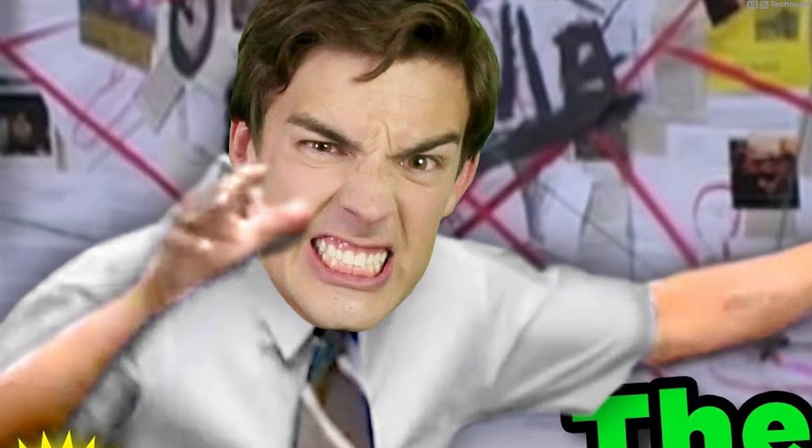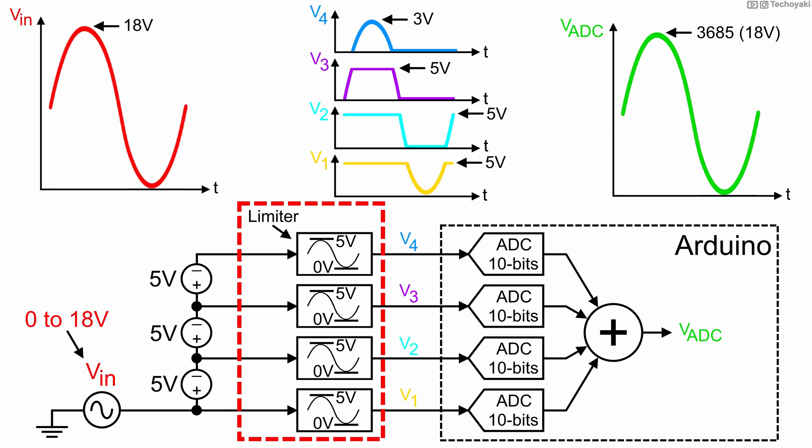So, theory is nice and all, but how do we actually implement this circuit, specifically, the voltage limiter and the voltage offsets?